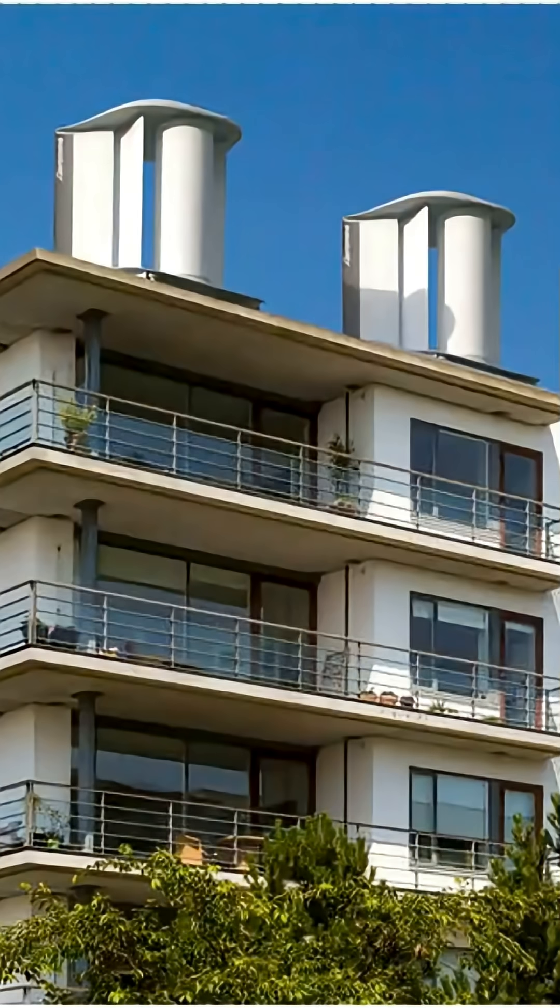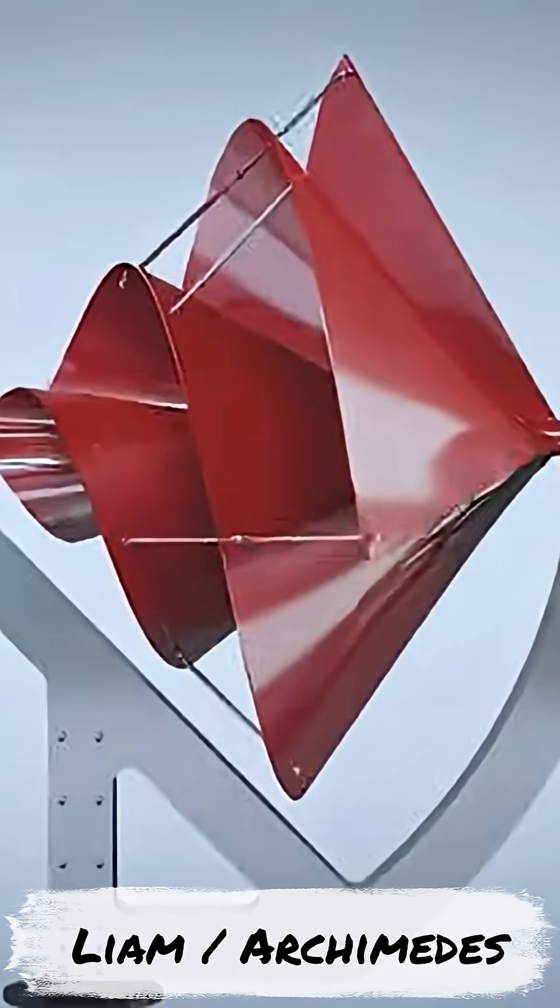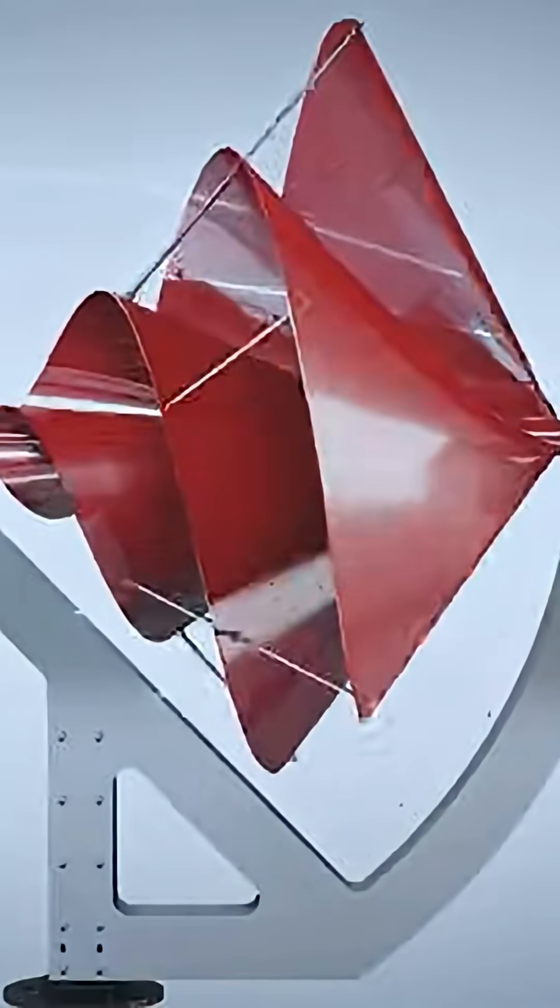Number three: Archimedes wind turbine, also called the Liam wind turbine. This doesn't have to face directly into the wind to operate. It can catch winds from a wider sweep angle compared to conventional horizontal axis wind turbines.